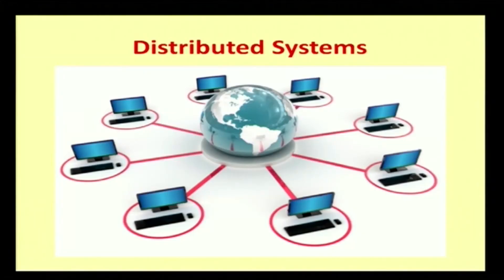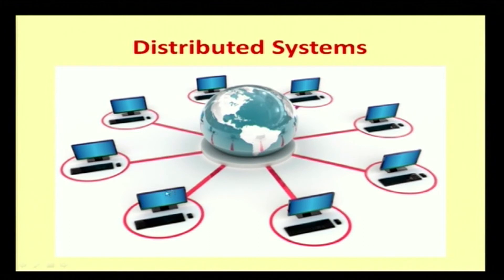Let us see a diagrammatic view of a distributed system. This is how a distributed system looks. From one locality a person types a value for Gmail, and from another locality another person types a value. Proxy servers are located at various points. When one server is busy, the request immediately goes to the next server, and finally the data is retrieved. The distributed system is therefore one of the most efficient systems.